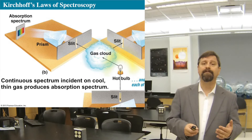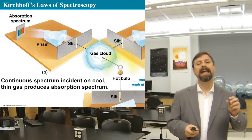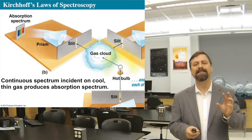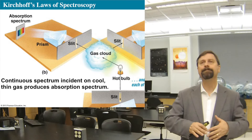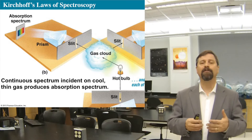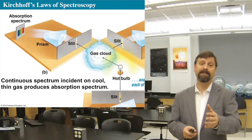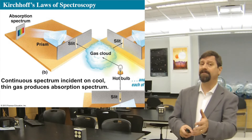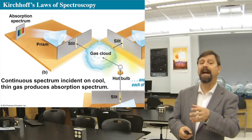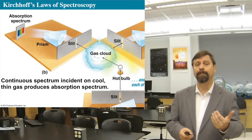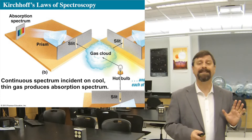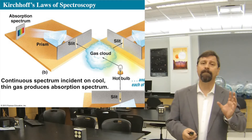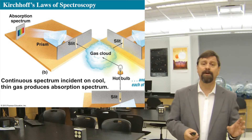...maybe it's the same gas, maybe it's hydrogen gas cooler than the bulb. As the light from the hot bulb passes through the cooler gas, the cool gas absorbs the light and the absorption dims the light at specific frequencies.